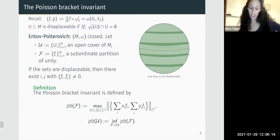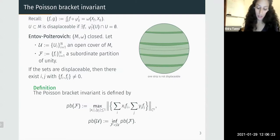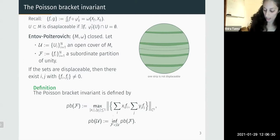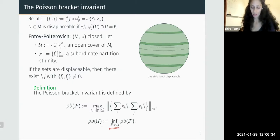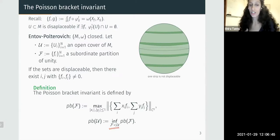The motivation for this definition comes from operational quantum mechanics, where this Poisson bracket invariant represents a certain noise. The infimum over the space of collections of functions makes this invariant quite difficult to compute or estimate, especially in cases where the answer is not zero.